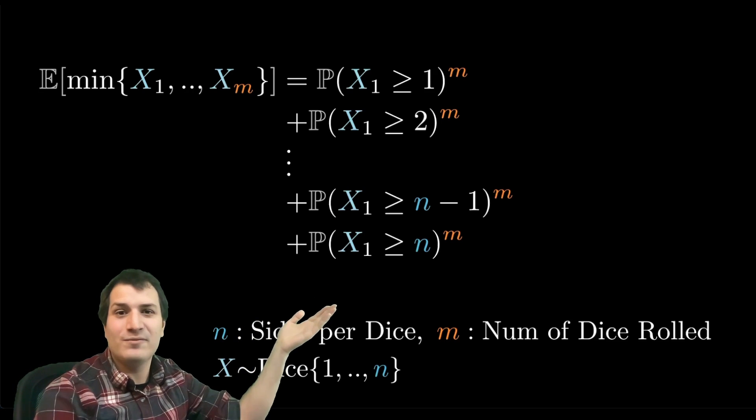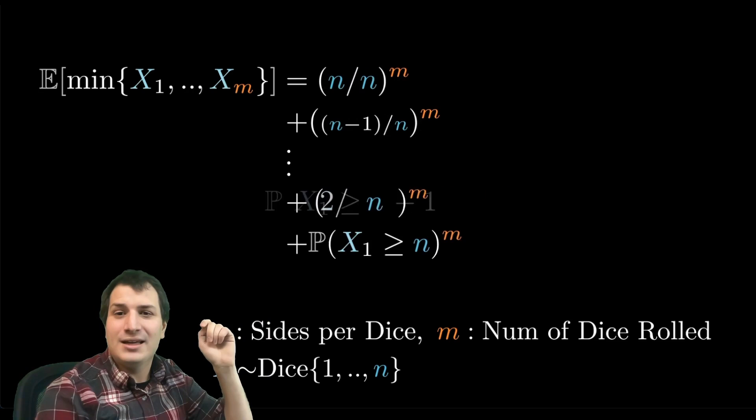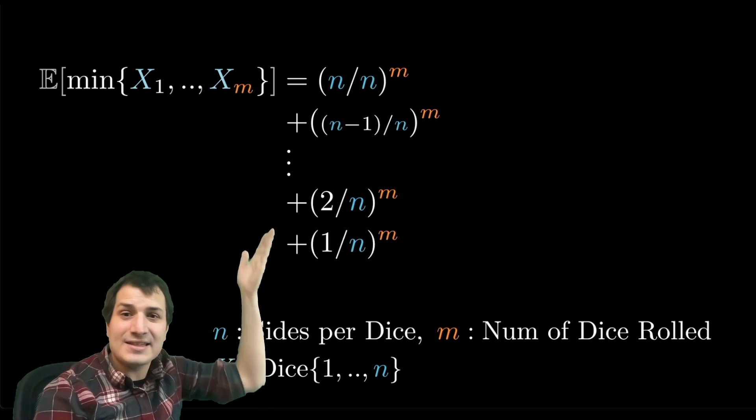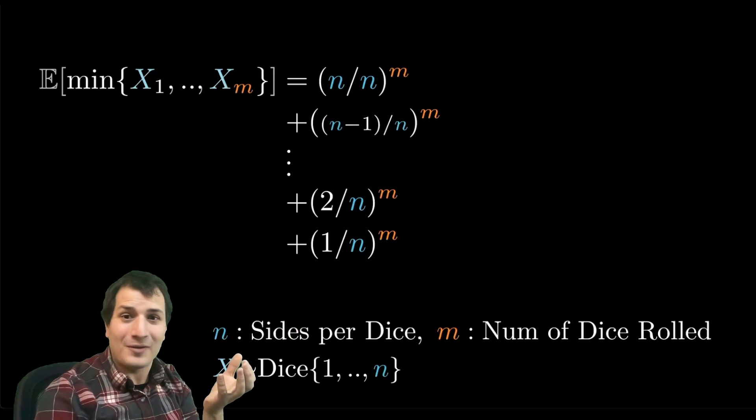Last but not least, these are dice rolls. What is the chance that a single dice roll is larger than some value? Well, it's just proportional to that value. So this one's n over n, then n minus 1 over n, all the way down to 1 over n. And this is exactly the sequence we had before—the sum of powers. It's written in the reverse order, so you just reverse the order and that gives us the final answer.